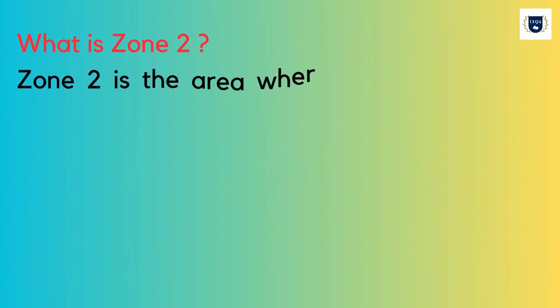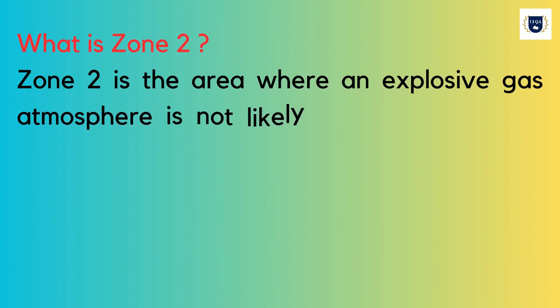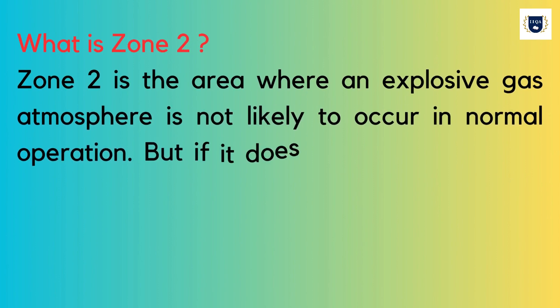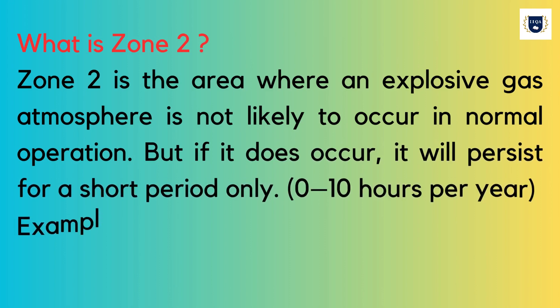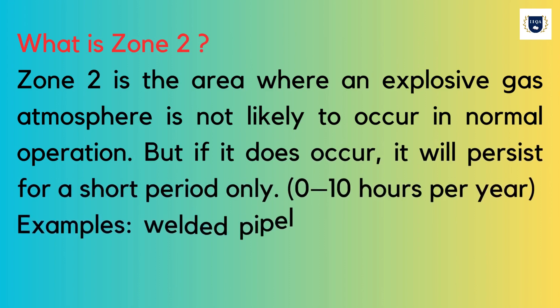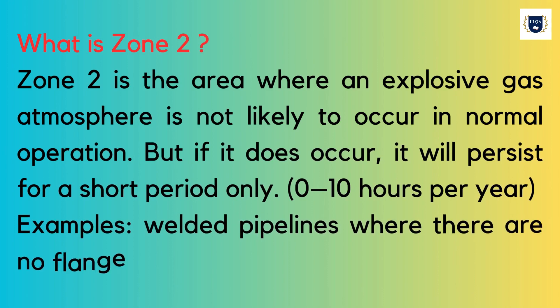What is Zone 2? Zone 2 is the area where an explosive gas atmosphere is not likely to occur in normal operation, but if it does occur, it will persist for a short period only — 0 to 10 hours per year. Examples include welded pipelines where there are no flange joints.